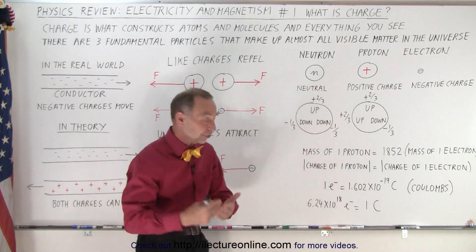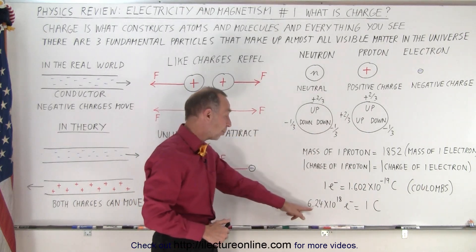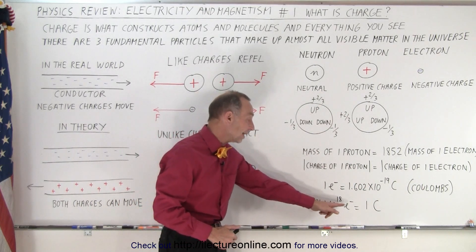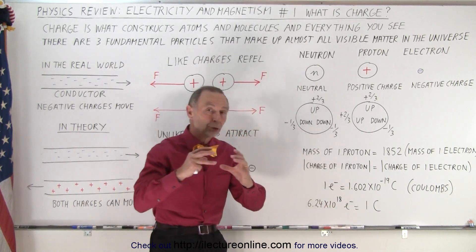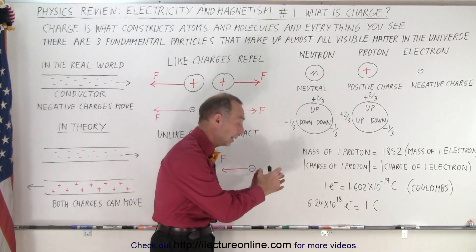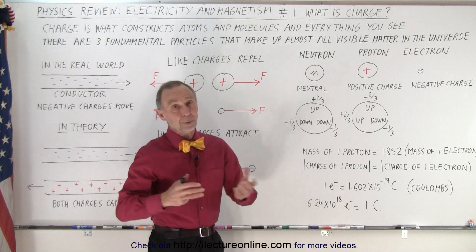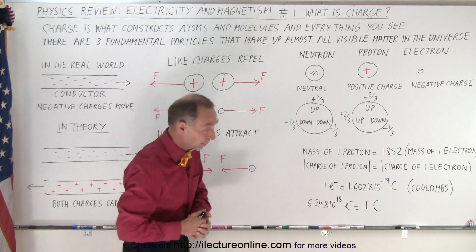Or if you take the inverse of that, you need about 6.24 times 10 to the 18th electrons to make up one coulomb of charge, and of course it could also be that many protons. In one case it will be positive charge, in the other case it will be negative charge.